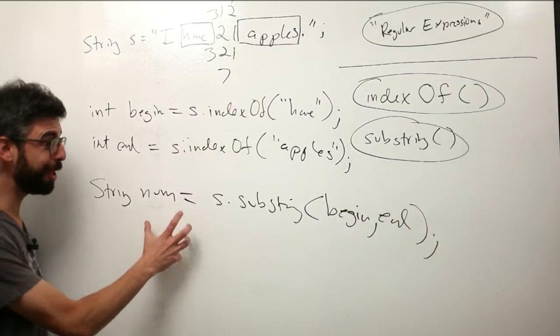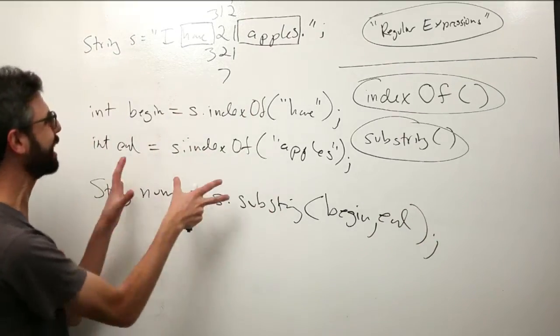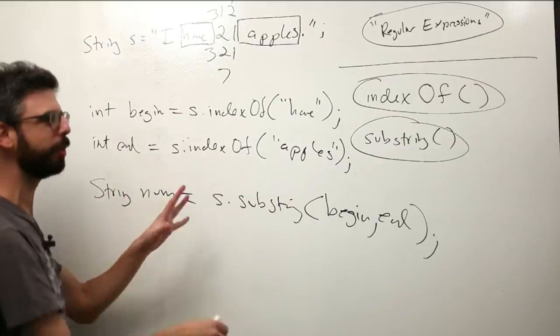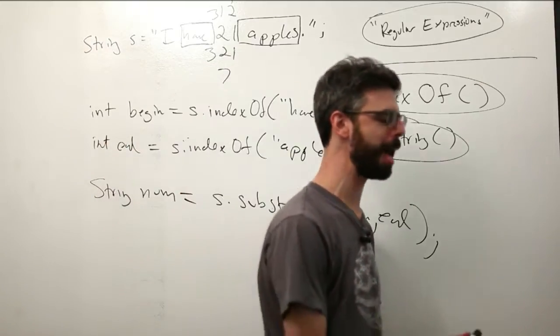and then string num equals s.substring between that beginning and that end. Now, there's a few little details here, things that we've missed, and this won't work exactly as intended, but we'll correct those in a moment. But before we do that, let's come back to the IMDB site.